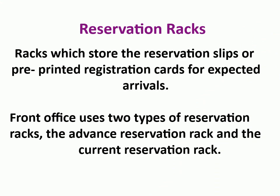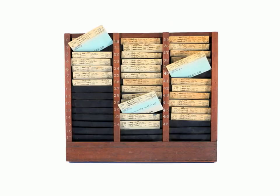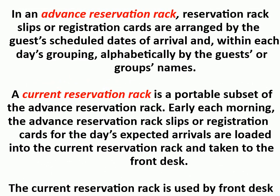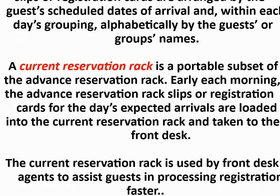Reservation racks store reservation slips or pre-printed registration cards for expected arrivals. Front offices use two types: the advance reservation rack and the current reservation rack. In the advance reservation rack, slips are arranged by guest scheduled dates of arrival and, within each day's grouping, alphabetically by guest's or group's names. The current reservation rack is a portable subset loaded each morning with that day's expected arrivals and taken to the front desk to assist agents in processing registration faster.